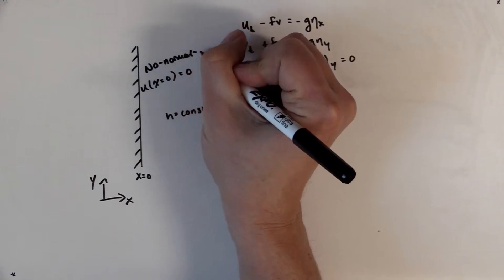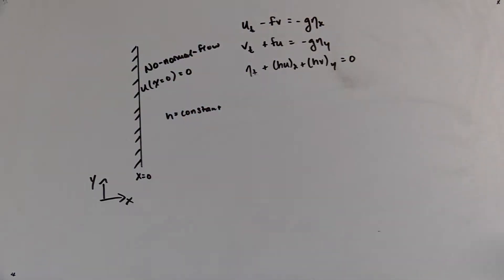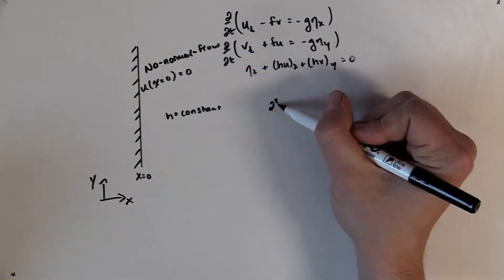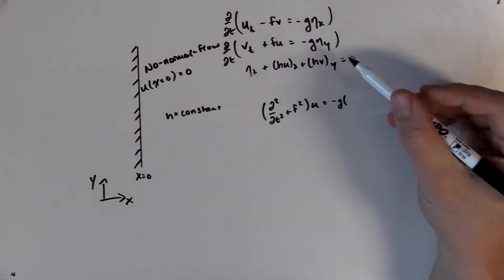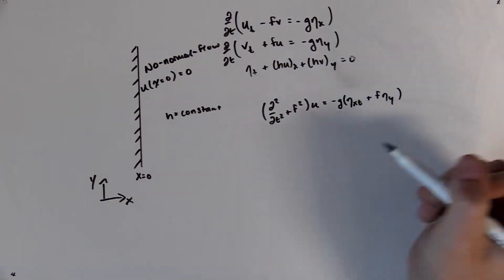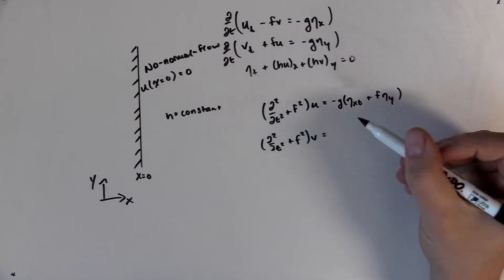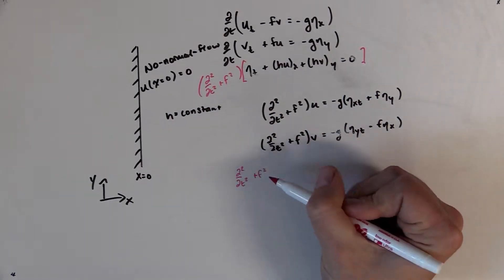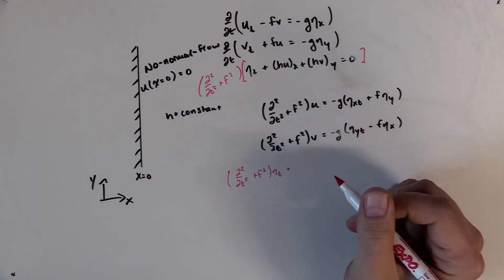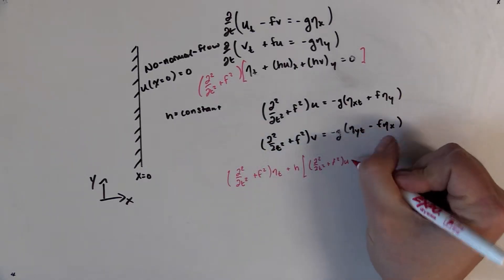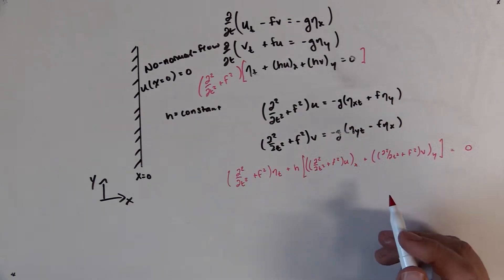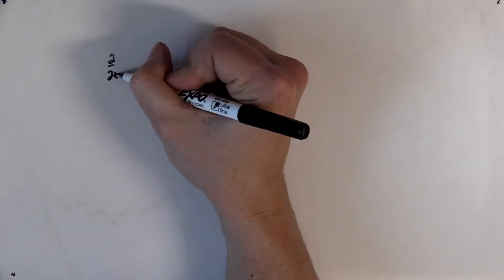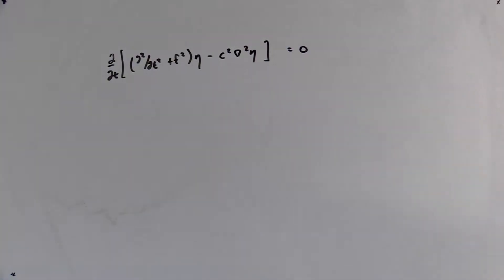What we want to do is find wave solutions for the free surface height, which means we need a single equation for eta. We start by taking time derivatives of the momentum equations and combining terms so that we can decouple u and v from each other. This leads to an operator out in front of u and v, which is the second derivative of time plus the Coriolis frequency squared. We can then apply this operator to the free surface height equation to develop a single equation just for the free surface height. Substituting in the right-hand side of our decoupled equations for u and v gives us a single equation only in terms of eta. This equation is called the field equation for the free surface height.